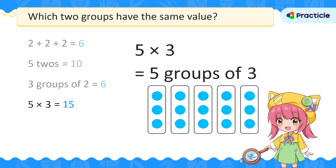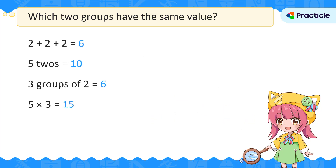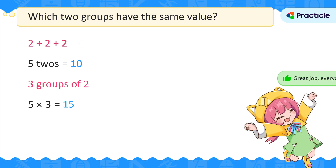This is not the same as any of the other groups. So now we can confidently say that the two groups that have the same value are group 1 and group 3. Did you get that?